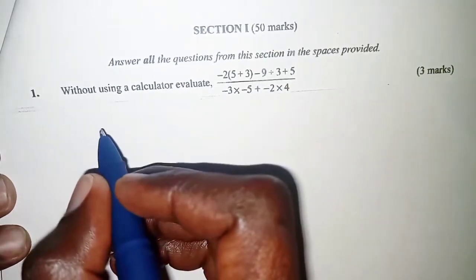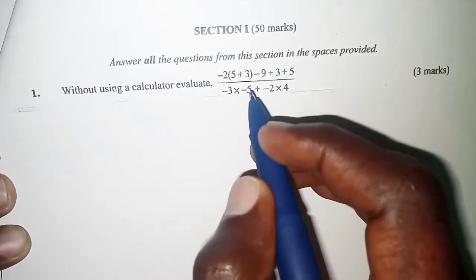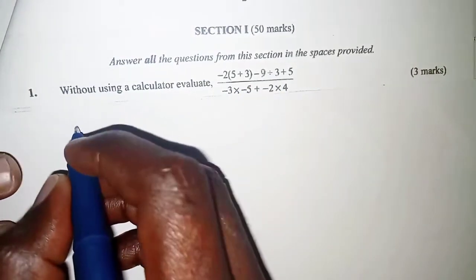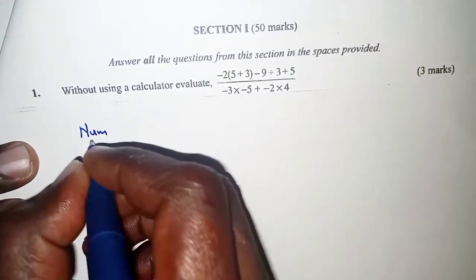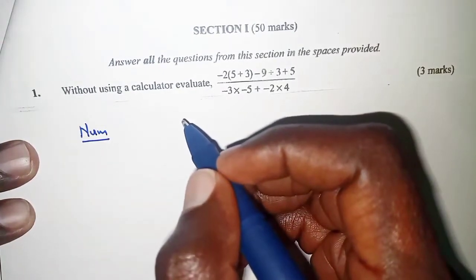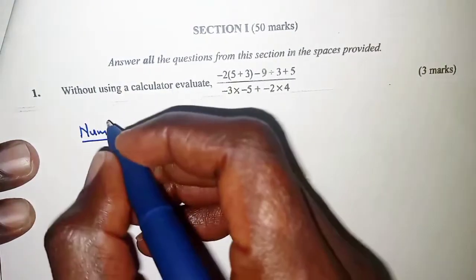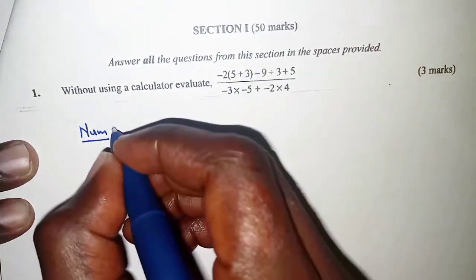We are going to do the numerator and denominator separately. Begin with the numerator. Now, because we have mixed operations, then remember, we'll have to apply BODMAS.